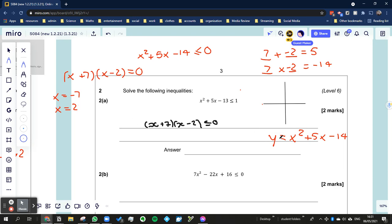So if I plotted the graph y is equal to x squared plus 5x minus 14, then when y equals 0, I have the equation here. In other words, I'm going to have an intercept at x equals negative 7 and I can have an intercept at x equals 2.